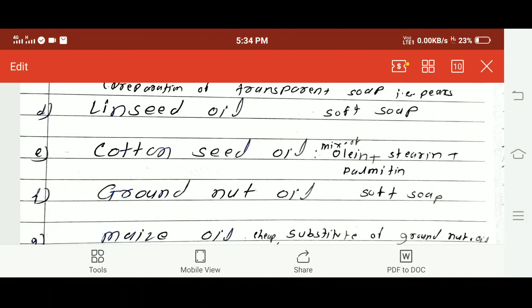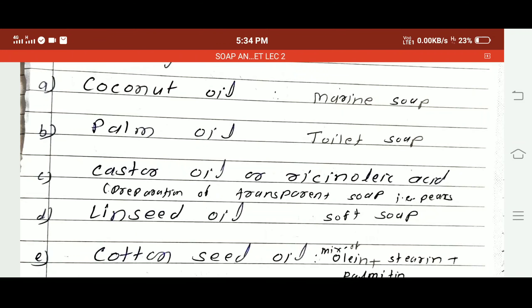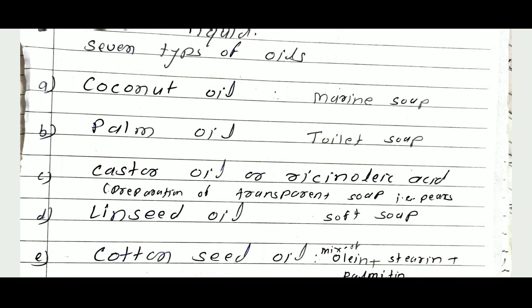Castor oil is also called ricinoleic acid. It is a hydroxy unsaturated fatty acid — unsaturated means presence of carbon-carbon double bond. A general example of a hydroxy acid is salicylic acid. Castor oil or ricinoleic acid is mainly used for manufacture of transparent soap. An example of transparent soap is Pears.